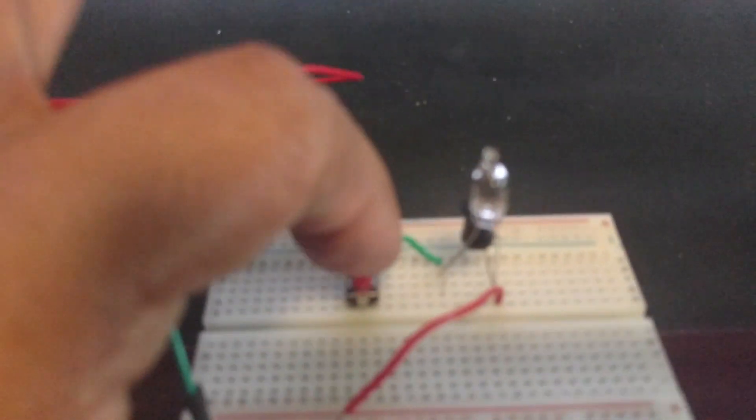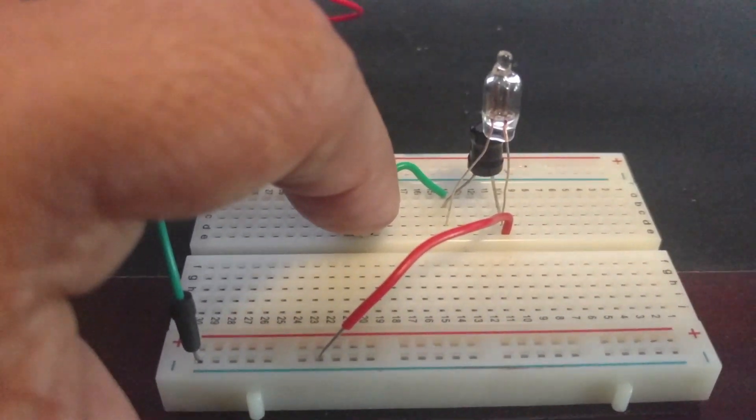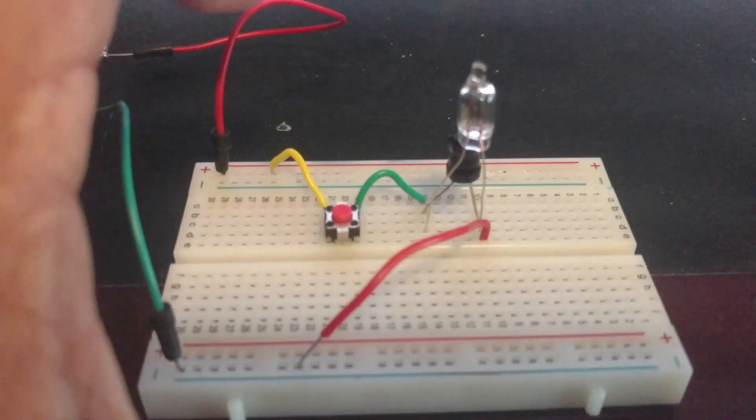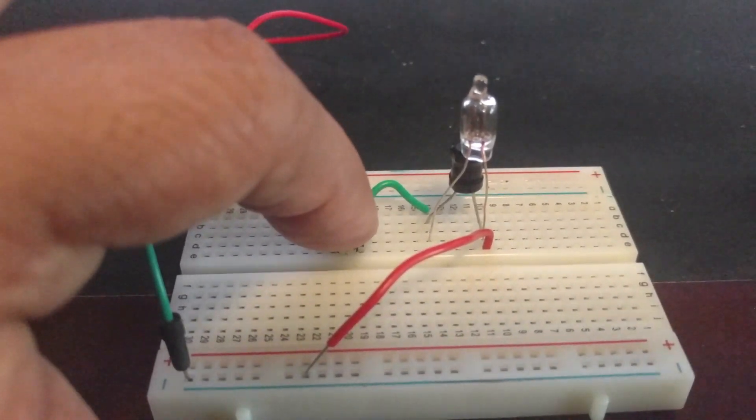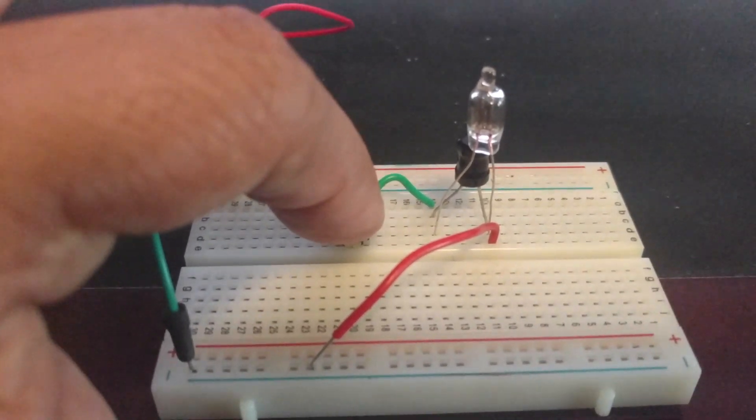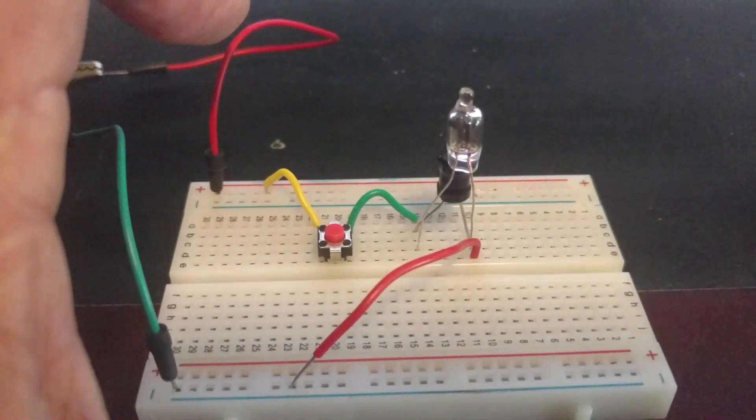So let's flip the switch on and I'm holding it down there. Notice the bulb does not turn on but when I let go you saw the bulb momentarily turn on. Let's try that again. It's pressed and when I let go the bulb momentarily turns on.